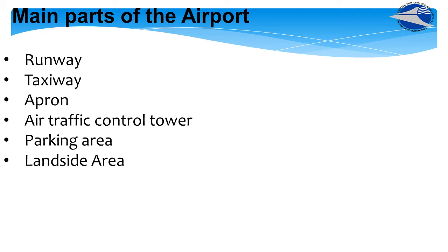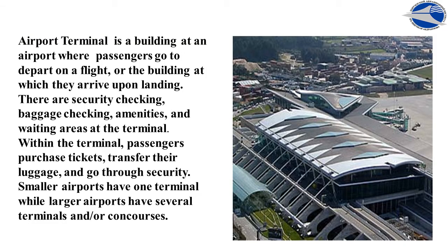The terminal area includes aprons, buildings, car parking areas and hangars. The airport terminal is a building at an airport where passengers go to depart on a flight, and it is also the building at which they arrive upon landing. There are security checking, baggage checking, amenities and waiting areas at the terminal. Within the terminal, passengers buy tickets, transfer their luggage and go through security. Small airports have one terminal, and larger airports have several terminals.